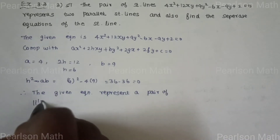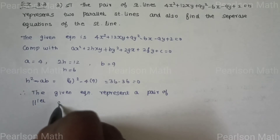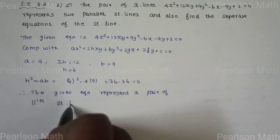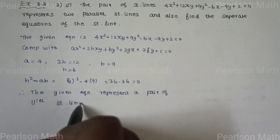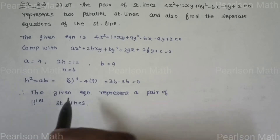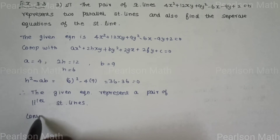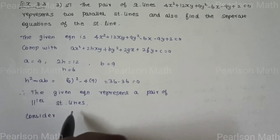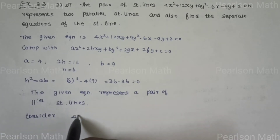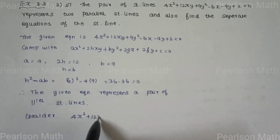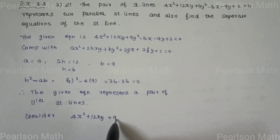Now we prove the pair of straight lines are parallel straight lines. To find the separate equations, consider 4x² + 12xy + 9y².